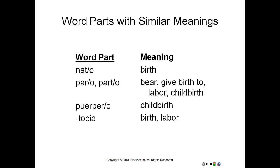Here are some word parts with similar meanings so you don't confuse them. Nato means birth. Paro or parto means bear, give birth to, labor or childbirth. Purpuro means childbirth. And tocia means birth or labor. Once we get into actual medical terms, these will all make a little bit more sense.